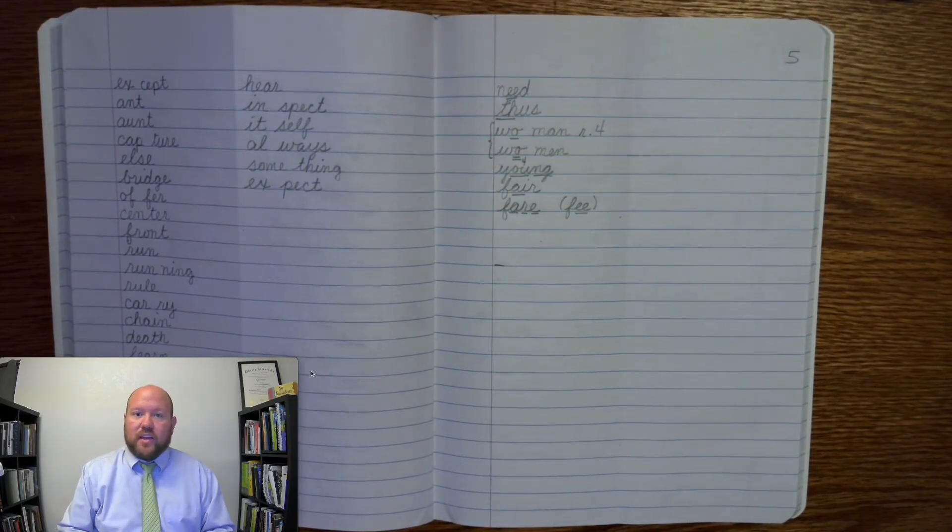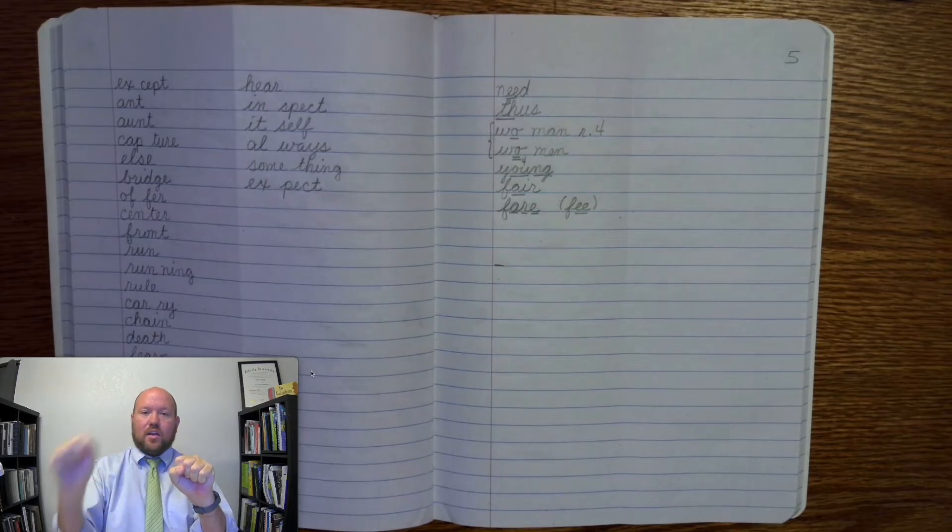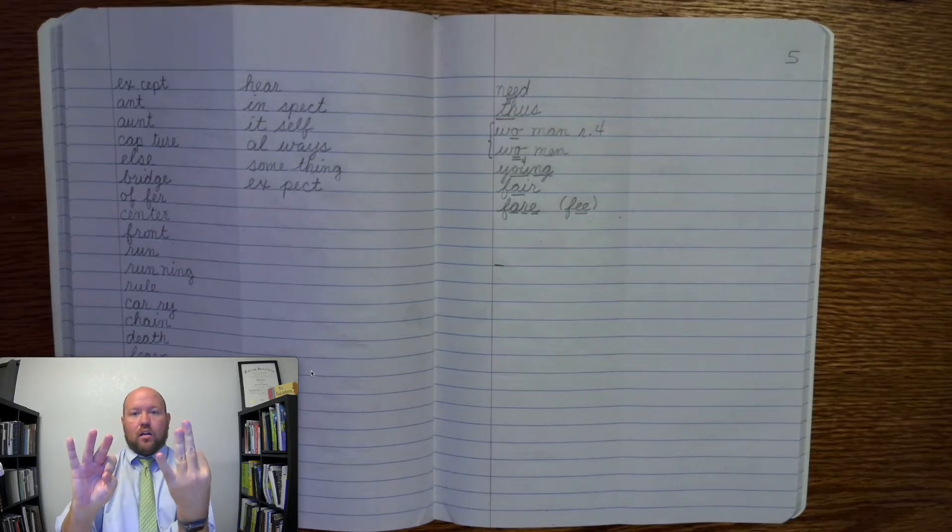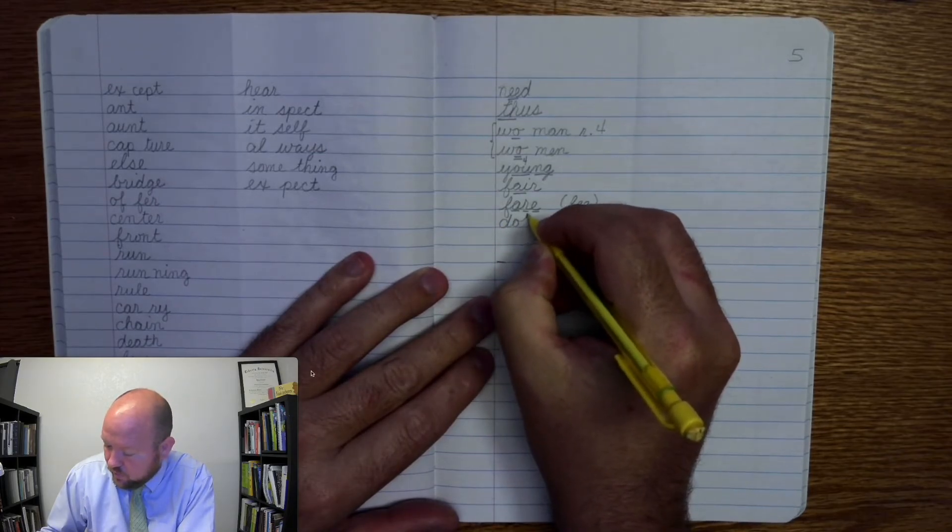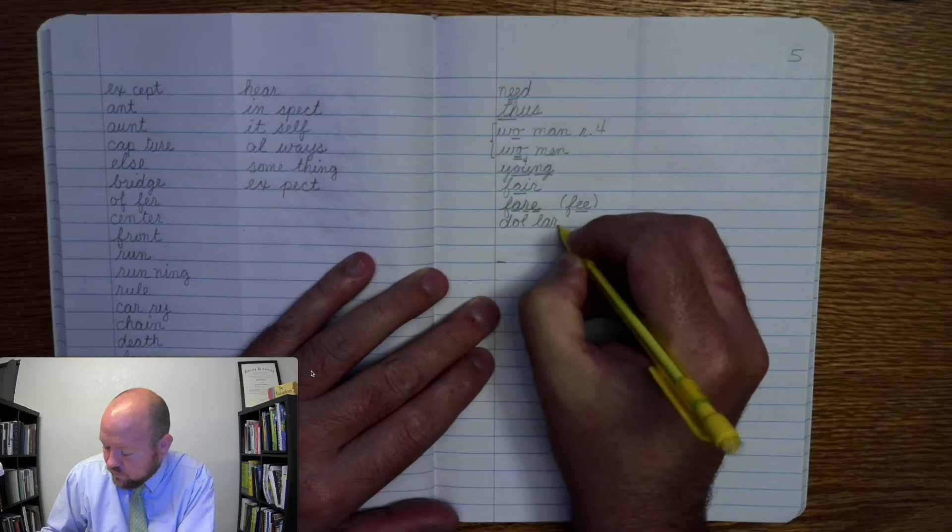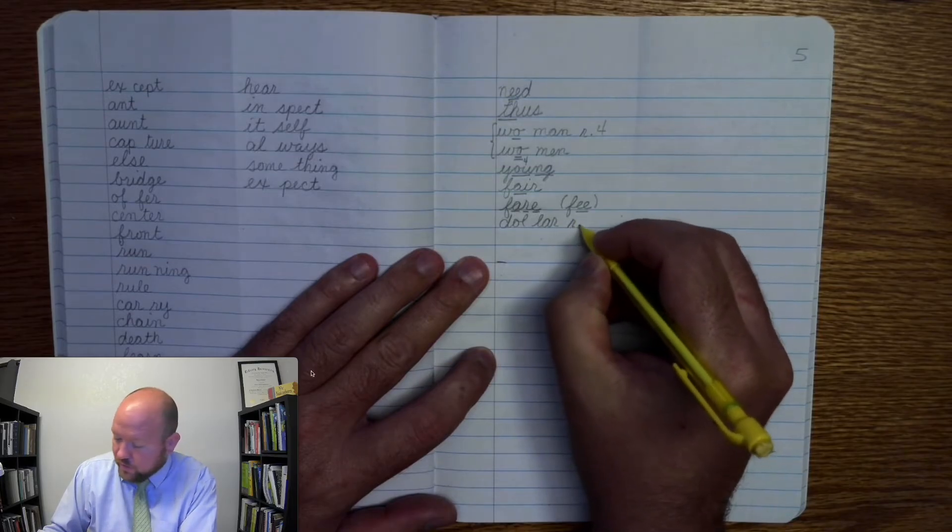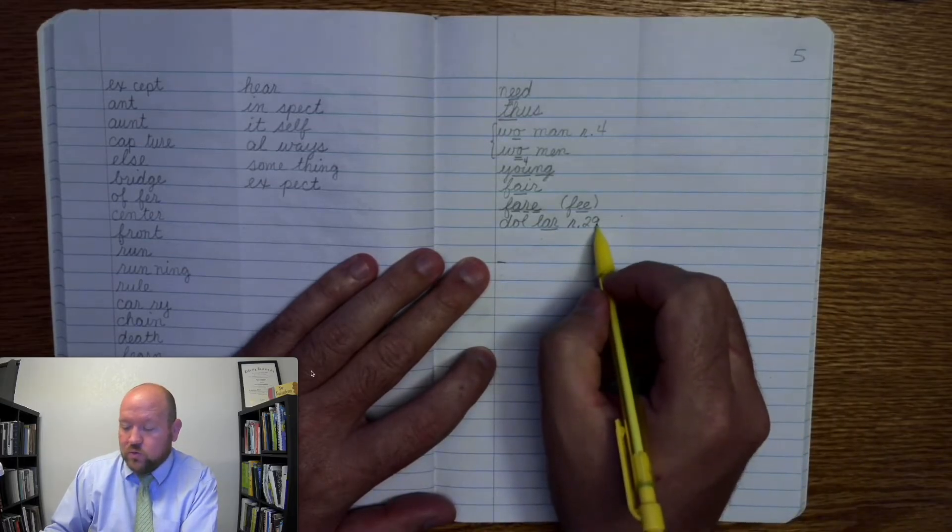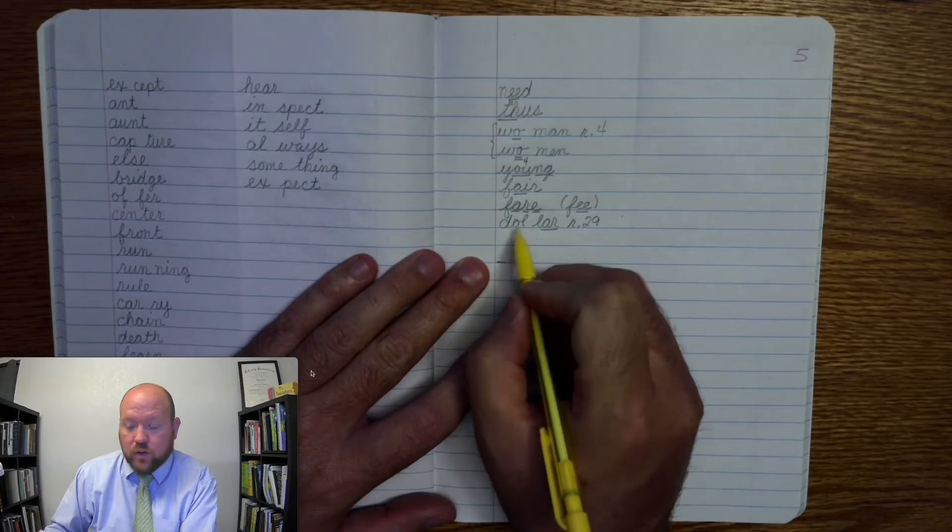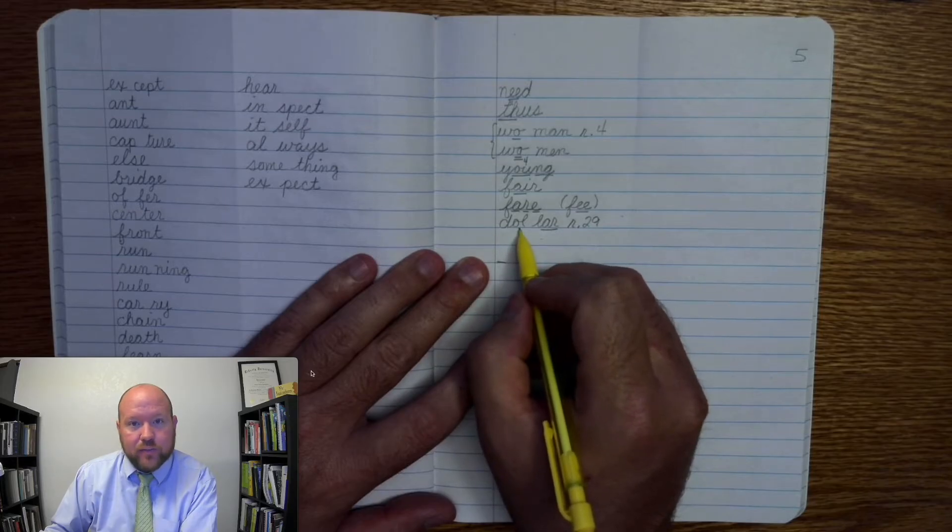The next word is dollar. Like the candy cost one dollar. Two syllables. Dollar. Base word dollar. D-O-L, L-A-R. Dollar. Doll, lar. Markings. D-O-L rule 29. L-A-R. D-A-R once. Now what's rule 29? We need this first L. We don't hear it, dollar. We don't hear it, but we need it. Otherwise the O would say O at the end of the syllable, and it would be dollar.